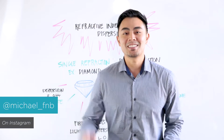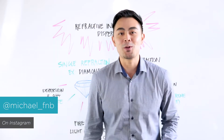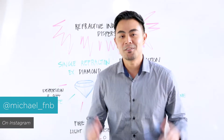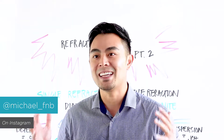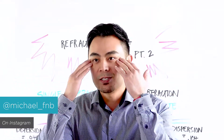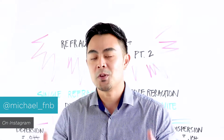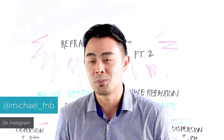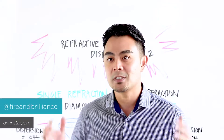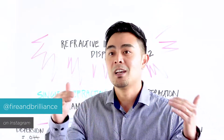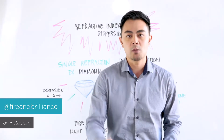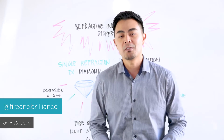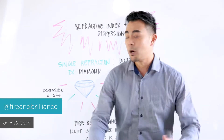Hey guys, it's Michael from Fire and Brilliance, and this is part two of two — we're going over fire in Fire and Brilliance. Fire and brilliance is a play on light to the naked eye, so when you're looking at a gemstone you can explain what all the sparkles mean. We went over brilliance last week in relation to the refractive index, and that video is already available. This is part two, and we're going over dispersion, or fire.